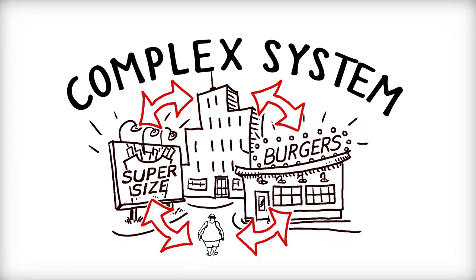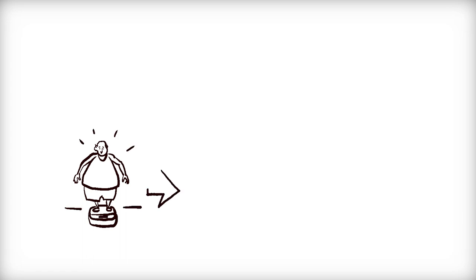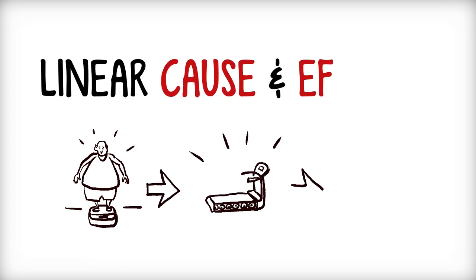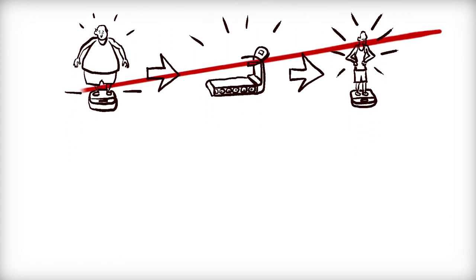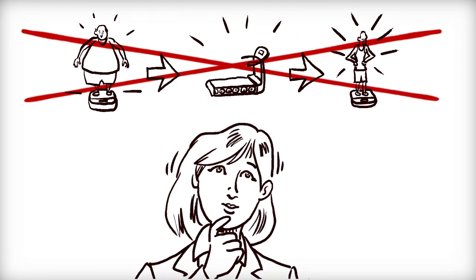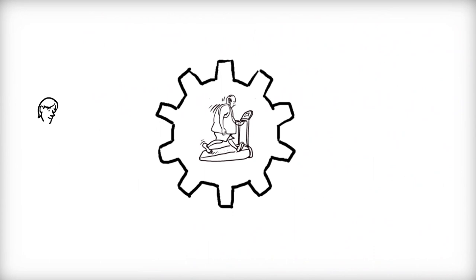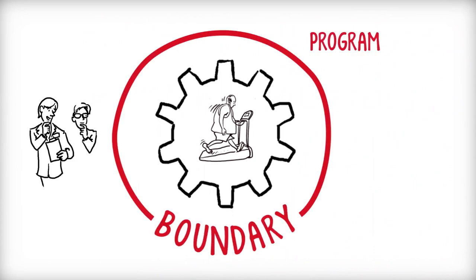If Suzanne were to use a systems approach, she would realize that relying on simple linear cause and effect solutions for one program would ignore those interactions and likely fail. While Suzanne's staff at the program level have a tendency to think only within the boundaries of their program,